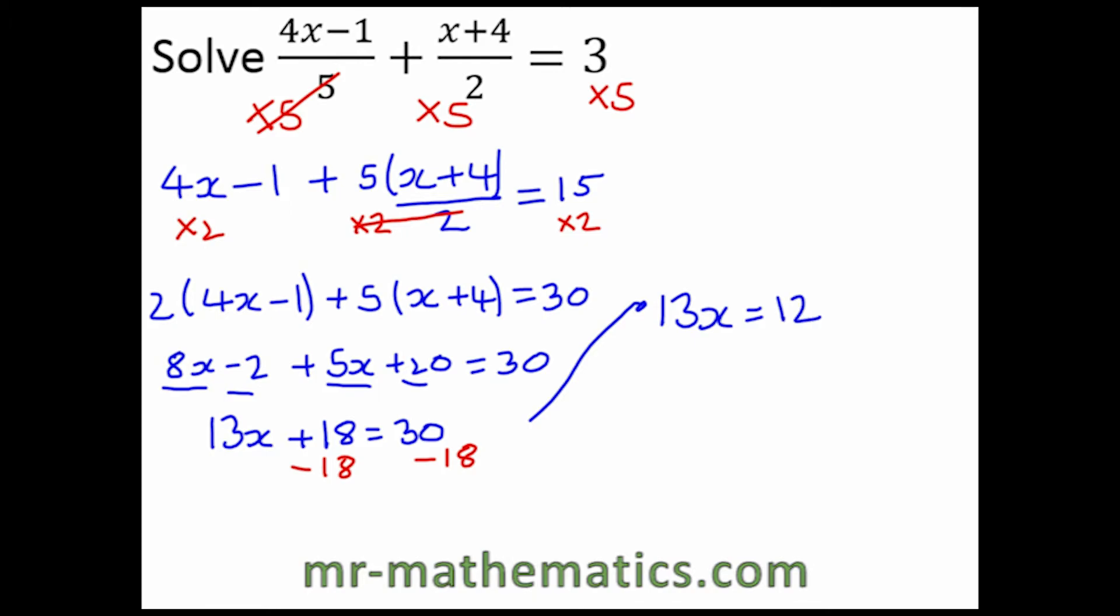And finally divide both sides by 13 because 13 divided by 13 cancels to make 1. So x equals 12 over 13. Thank you for watching. I hope you found it useful.